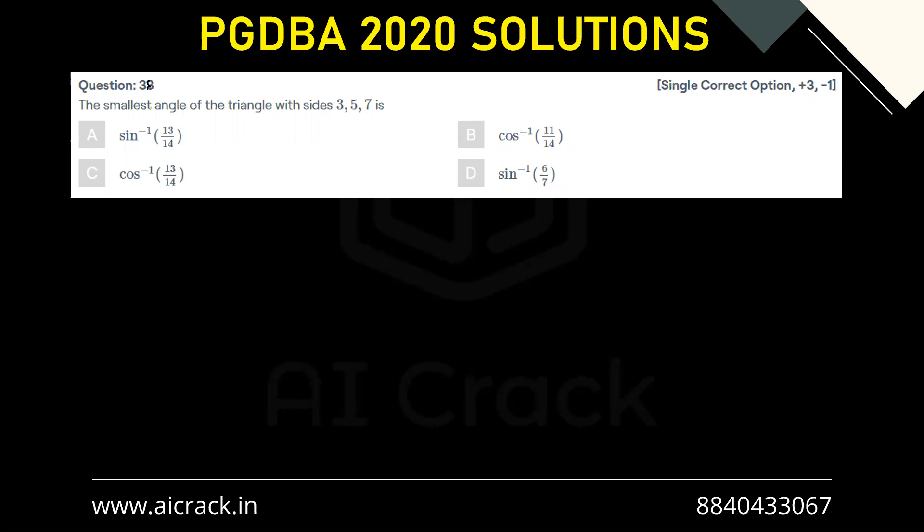Hi everyone, let us solve question number 38. The smallest angle of the triangle with sides 3, 5, 7 is?